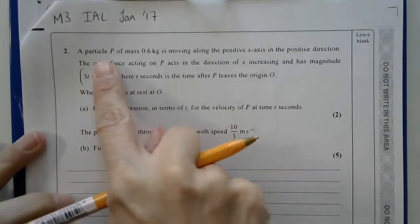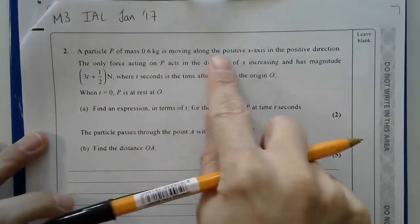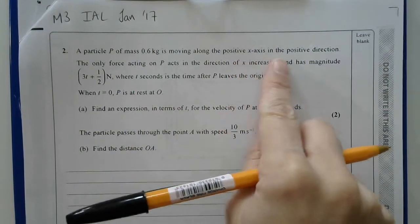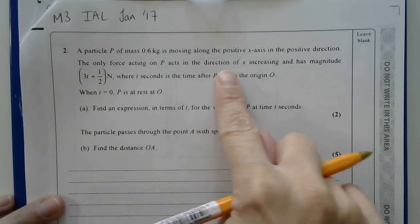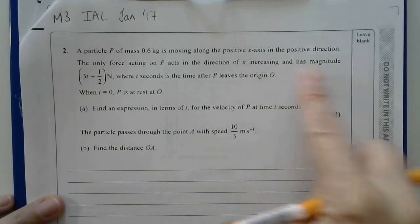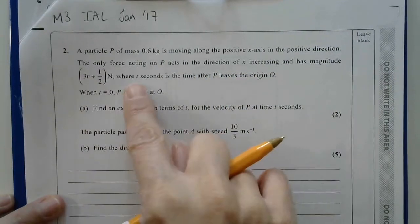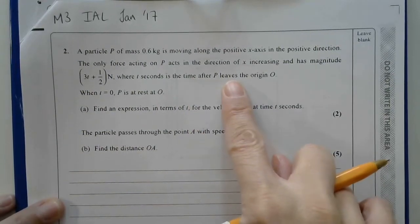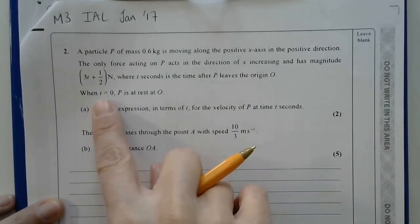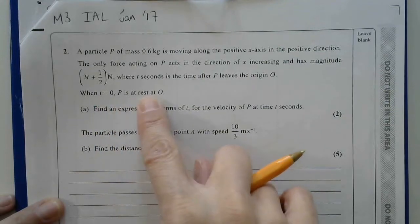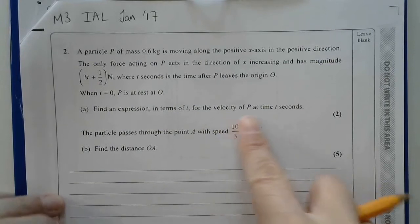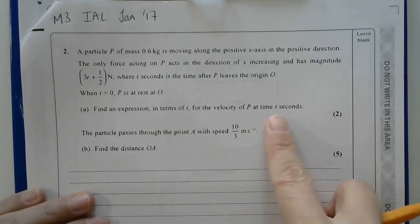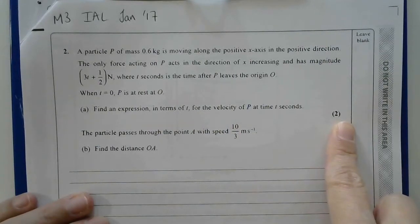Here I have a particle of mass 0.6 kg moving along the positive x-axis in the positive direction. The only force acting on P acts in the direction of x increasing, and has magnitude (3t + 1/2), where t is the time after P leaves the origin. When time is 0, the particle is at rest at 0. Find an expression in terms of t for the velocity of P at time t seconds, and this is worth 2 marks.